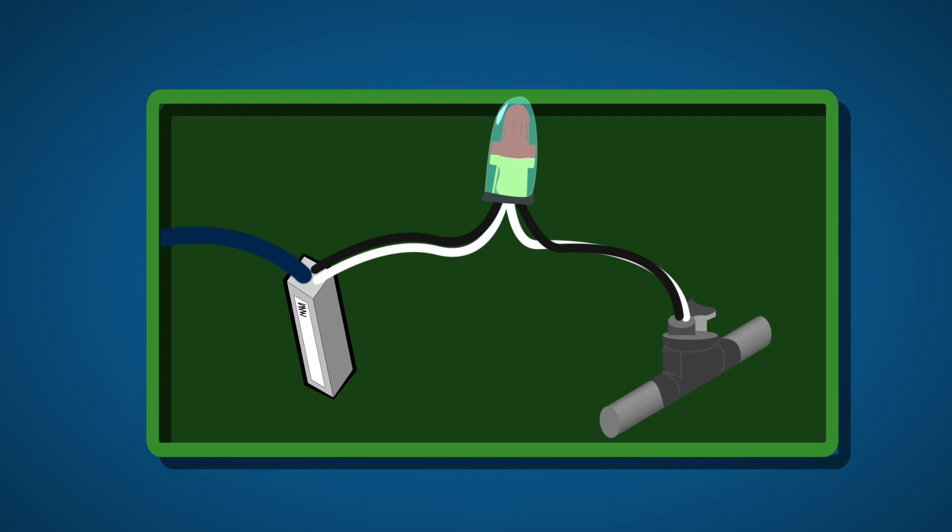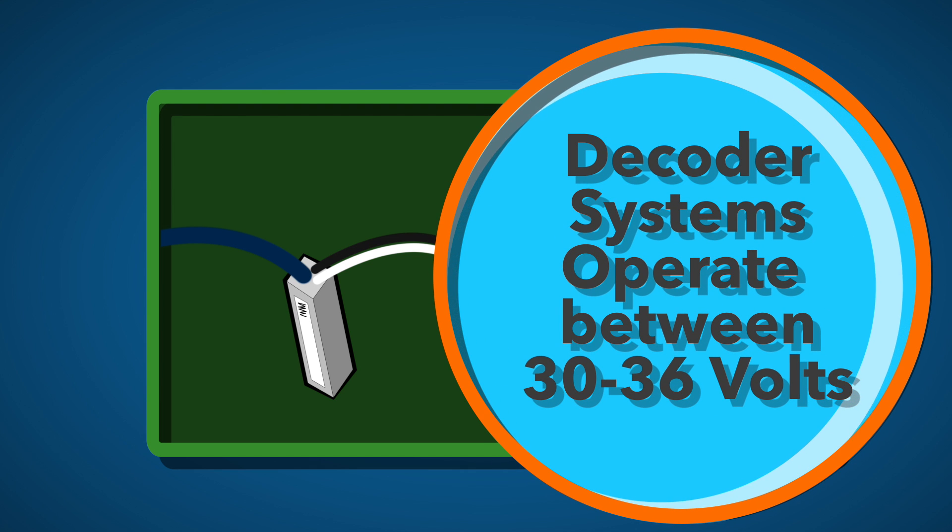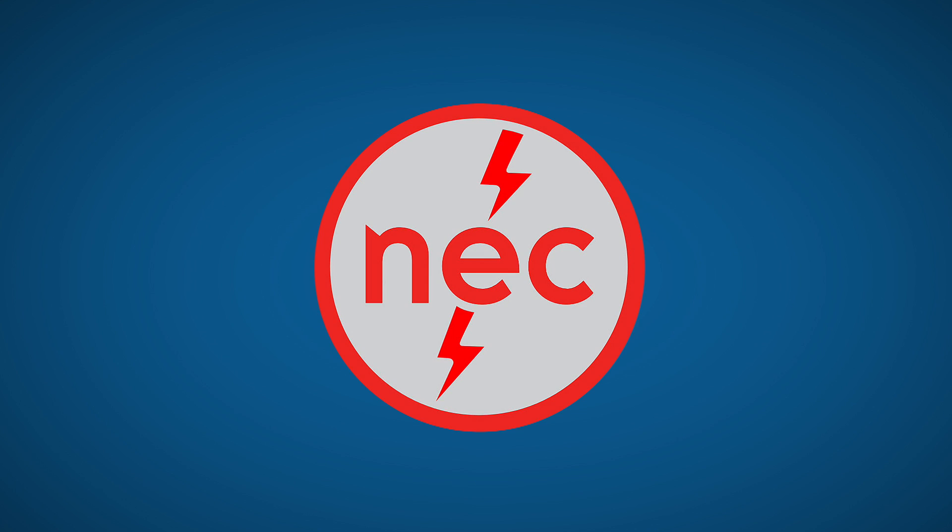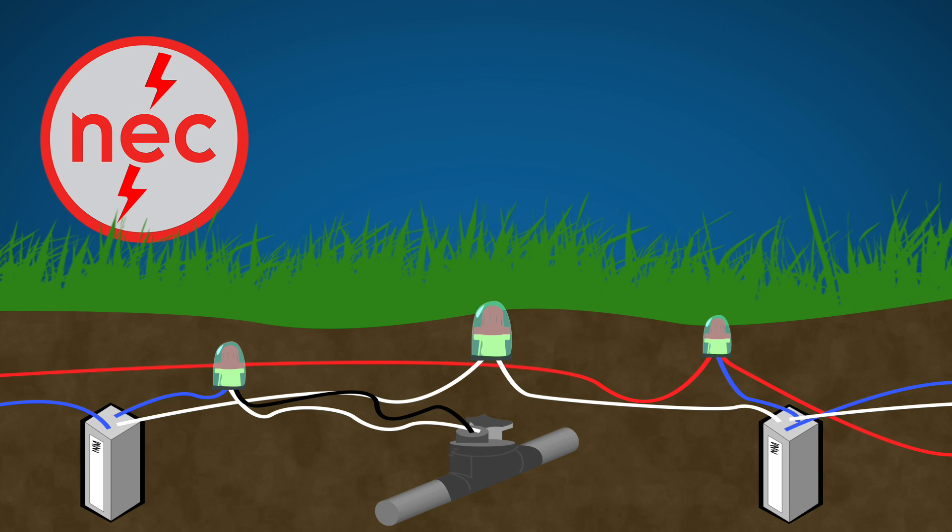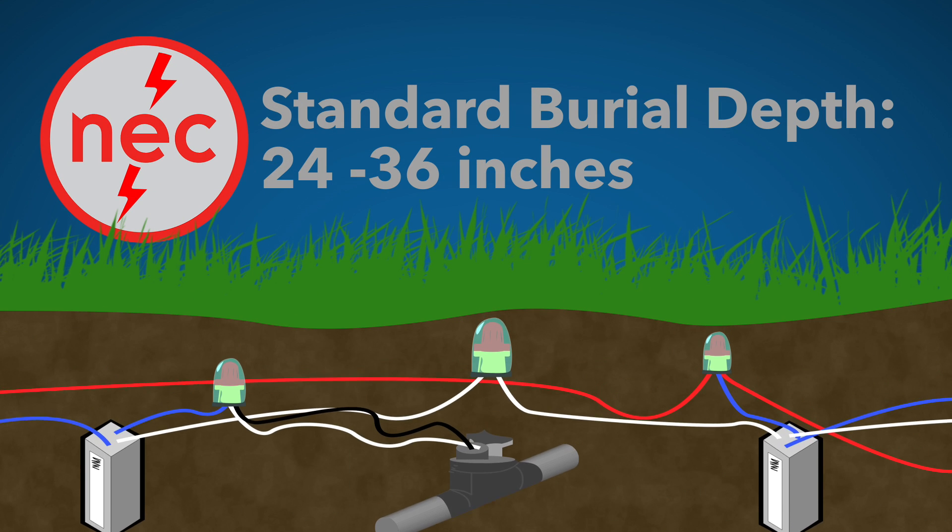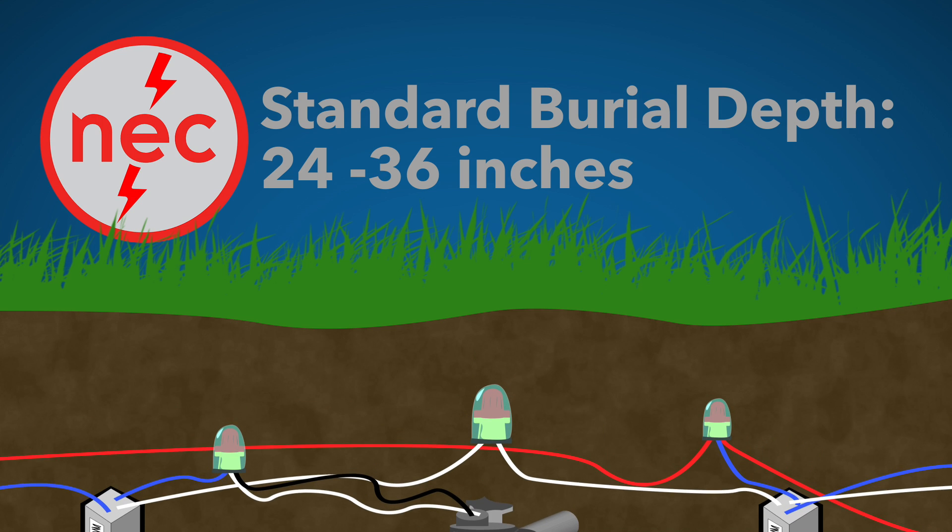Because decoder systems operate at a voltage between 30 and 36 volts, the National Electric Code specifies a standard burial depth of 24 to 36 inches for all wiring components. This protects the system, but it can also lead to extra digging work when making repairs.